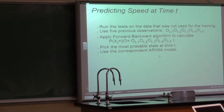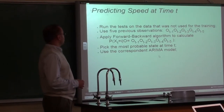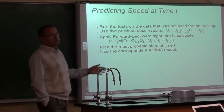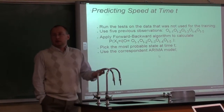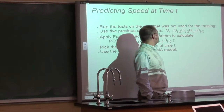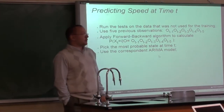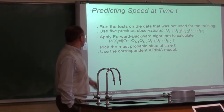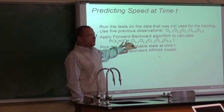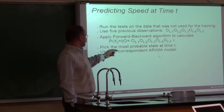How do we predict the state or speed at time t? We run test data that was not in the full training — we used March 3rd for training and other datasets for evaluation. We used five previous observations: T-minus-one through T-minus-five, so basically five minutes. Then we apply the forward-backward algorithm — a well-known algorithm for hidden Markov models. Using that algorithm, we find the probability distribution of the model being at state i given this set of observations, pick the most probable state at time t, and use the corresponding model.